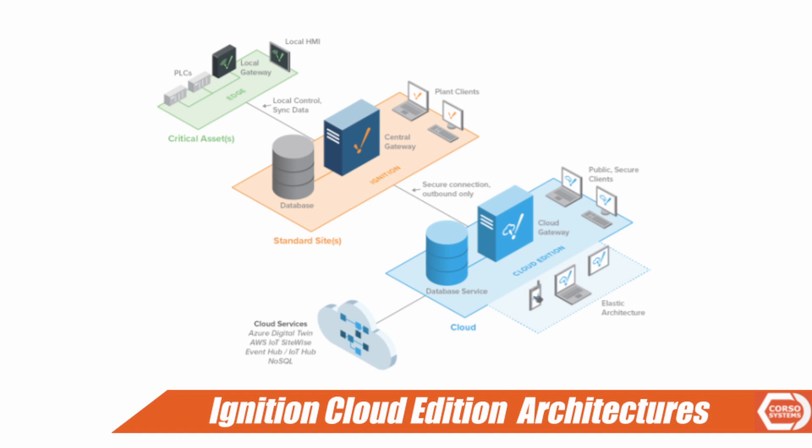This would be connected to your database or your clients at the plant level to view the data. Data from here can go up to the Cloud Edition Gateway using a secure outbound-only connection via MQTT or through an Ignition Gateway connection, allowing you to take advantage of cloud services like AWS SiteWise, machine learning algorithms, or dashboard tools like Power BI on Azure.